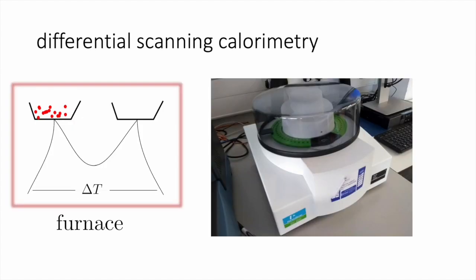This is an instrument with which we can measure thermodynamic properties — a differential scanning calorimeter — that you will be using in the practical class. It is very simple in its operation. In the old days calorimeters were huge, called bomb calorimeters, and not very precise. In this case we can use samples less than one gram in weight and obtain our results in a matter of tens of minutes.